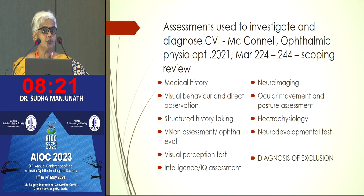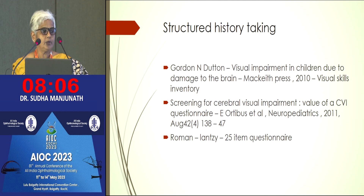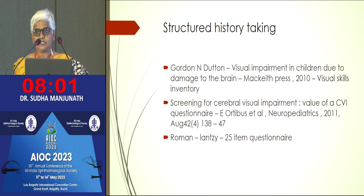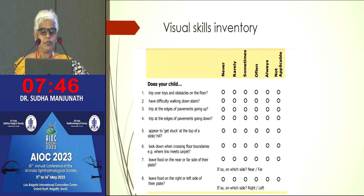Essentially, CVI is a diagnosis of exclusion. Since other colleagues will be talking about neuroimaging, I will focus on history taking and behavior assessment. Structured history taking is a very important part of CVI assessment and classification. In our country especially, this is a simple thing to do because it only needs one person who will spend time to ask the questions. The Visual Skills Inventory by Dr. Gordon Dutton is the history taking protocol we have been using.